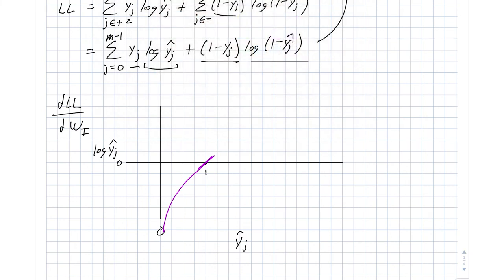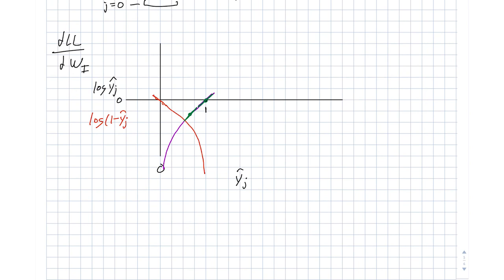Likewise, if we want to look at log of 1 minus y_j hat, it's just a mirror image of this curve. So it crosses the origin with a slope of 1. And as we approach 1, as y_j hat approaches 1, then this curve approaches negative infinity again. So the key observation here is that looking at either the purple or the red curve, anywhere that we drop onto, so we can drop onto here, the slope here is something interesting. And it's greater than 0. In fact, it's far away from 0. The slope of 1, slope is 1 as we cross there. And as we head down this curve, as y_j hat gets smaller and smaller, the slope increases. And in fact, it approaches infinity as we approach 0.